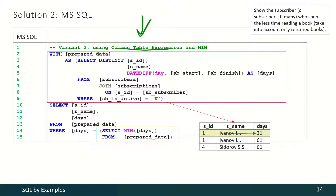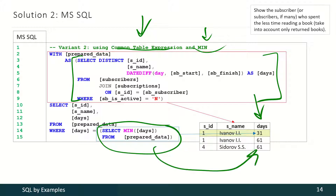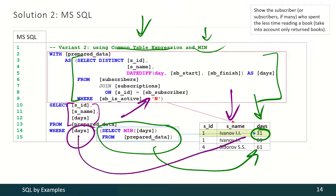Or we may use a common table expression and MIN approach. First, we produce all the information about our subscribers and the periods of their book reading. Then we find out the shortest period. Then we use the information produced by the CTE and apply the condition that the time period length should be exactly equal to that minimal value. And this is our final result.